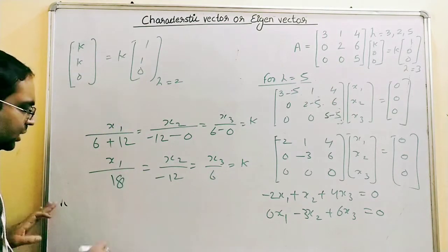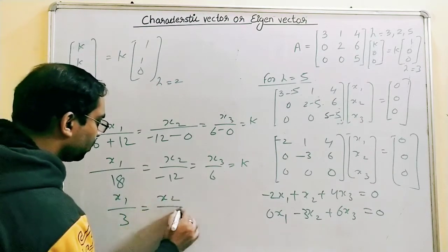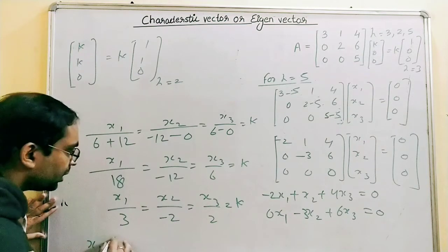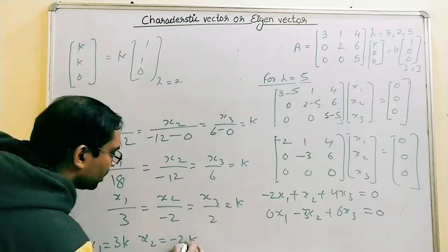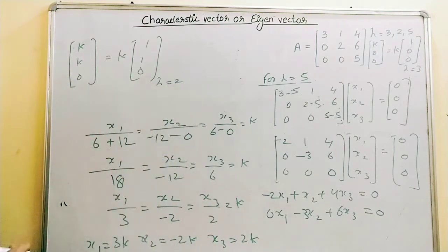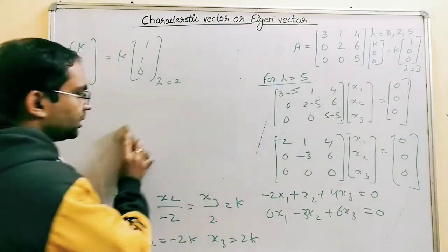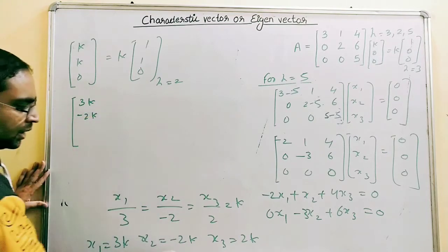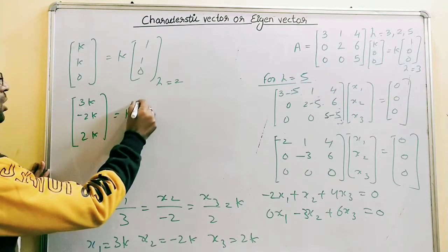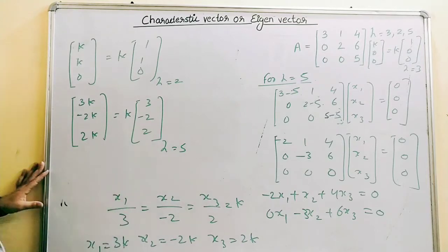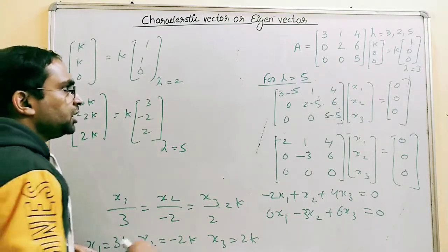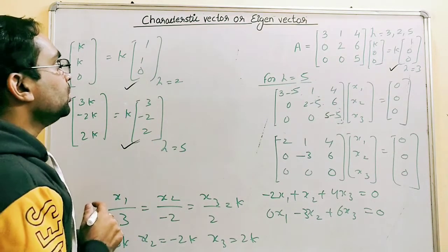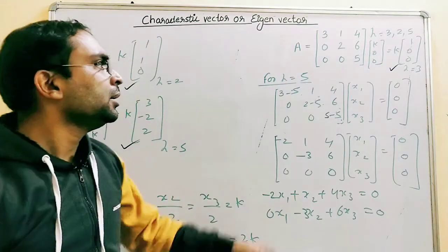Dividing through by 6 gives X1/3 = X2/(-2) = X3/1 = K, so X1 = 3K, X2 = -2K, X3 = 2K. Written as a vector with K factored out, the eigenvector for lambda equals 5 is [3, -2, 2]. These are the three characteristic vectors or eigenvectors for the given matrix A.